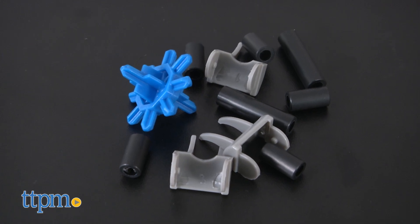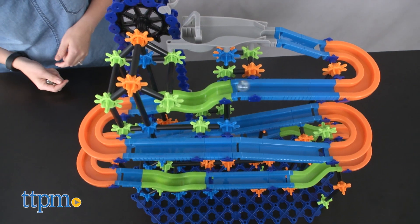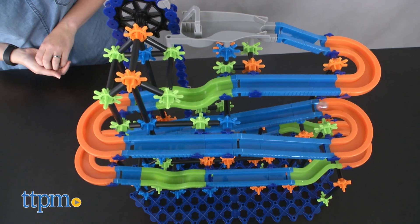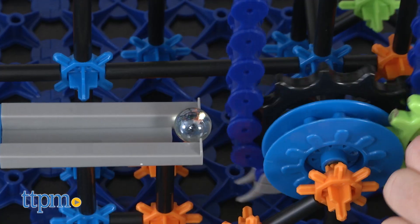This comes with 303 building pieces for designing a multi-level structure that will take the 10 included marbles down a slide filled with twists and turns.